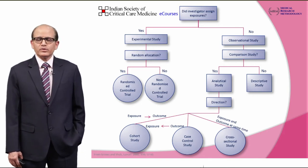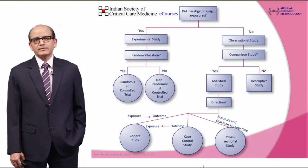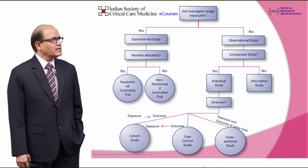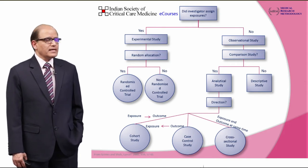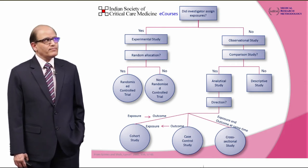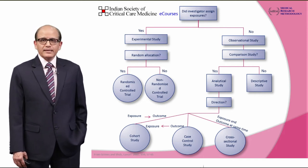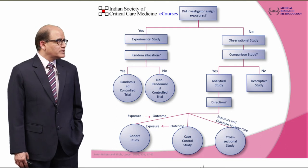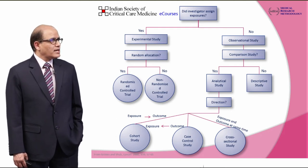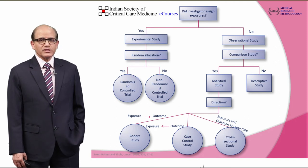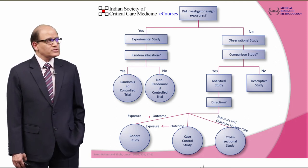In an experimental study, if subjects were randomly allocated it becomes a randomized controlled trial; if not, it becomes a non-randomized controlled trial. In an observational study, if a comparison is involved it becomes an analytical study; if no comparisons are involved, it is a descriptive study. An analytical study, depending on direction: if exposure and outcome were analyzed at the same time, it becomes a cross-sectional study; if outcome was related back to exposure, it becomes a case-controlled study.